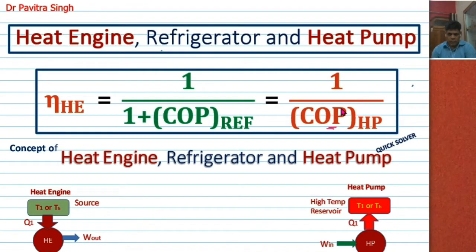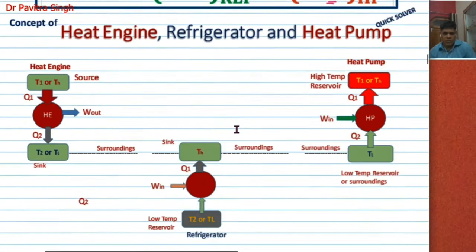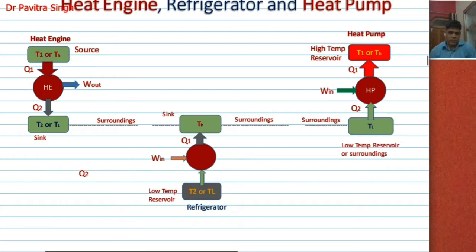Hello everyone, I am Pavitra Singh, welcome back to my channel Quick Solver. Today we will talk about the relation between heat engine, refrigerator, and heat pump, and we will prove that efficiency of the heat engine is equal to 1 upon 1 plus coefficient of performance of refrigerator, which is equal to 1 upon coefficient of performance of heat pump. You can see in this figure the heat engine, refrigerator, and heat pump.